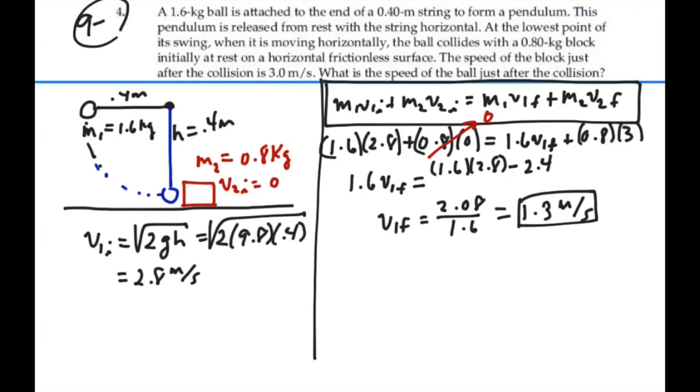We had to use conservation of kinetic energy for the first part of the experiment, where there was no collision, just to find our initial velocity. But then with the collision, we had to use conservation of momentum to figure out the final velocity. And that's how we had to go about it.